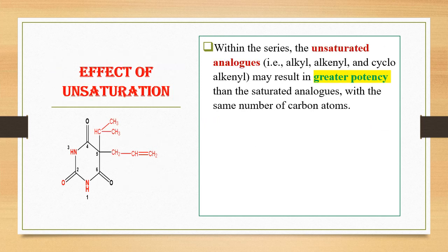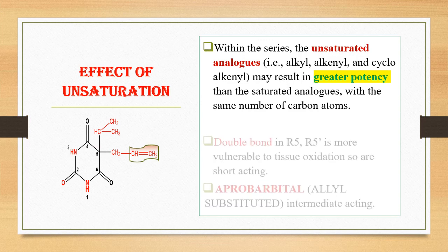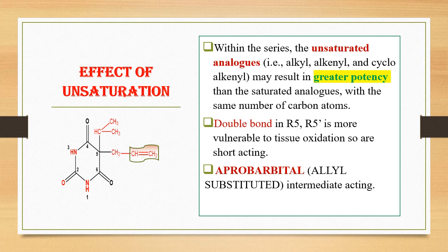Regarding the effect of unsaturation at C5: substituting barbiturates with an unsaturated or alkenyl side chain results in derivatives with greater potency compared to analogues with a saturated side chain. An example is aprobarbiturate, an intermediate-acting barbiturate with an allyl (unsaturated) side chain at the C5 position. Derivatives with a double bond — an unsaturated side chain — at C5 have a greater chance of tissue oxidation, meaning they are rapidly metabolized and therefore short acting.